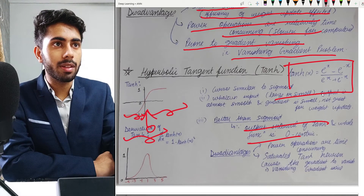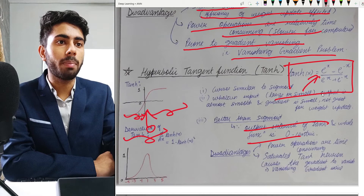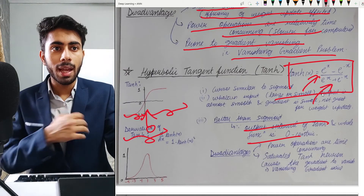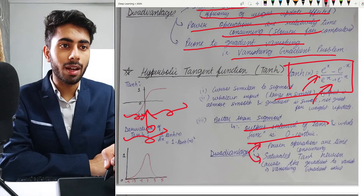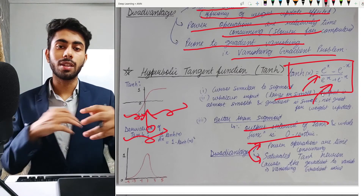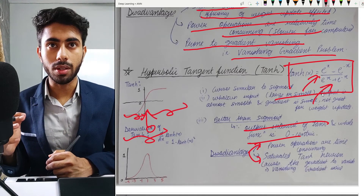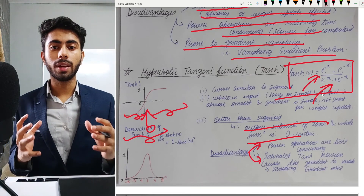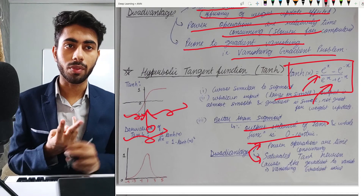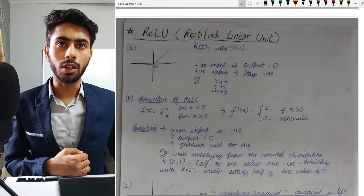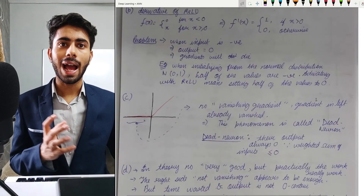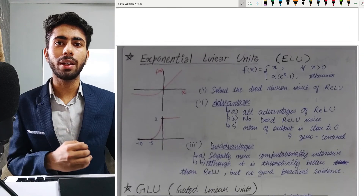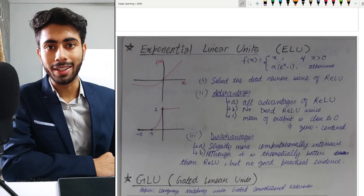The disadvantages of tanh are similar to sigmoid. Since the formula contains exponential or power operations, it is time-consuming. The other major disadvantage is the vanishing gradient problem, just as with sigmoid. In this video we learned about sigmoid and tanh activation functions. In the next video we will cover ReLU as well as its variants: Leaky ReLU, PReLU, and ELU.